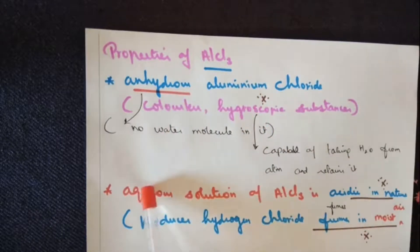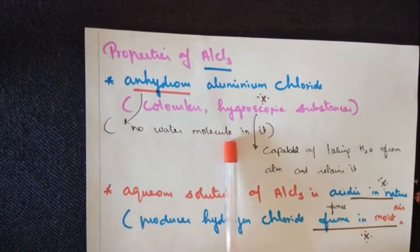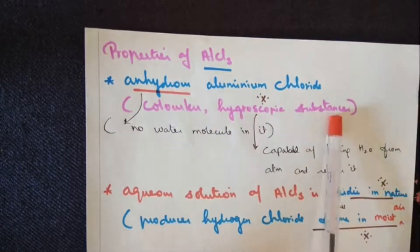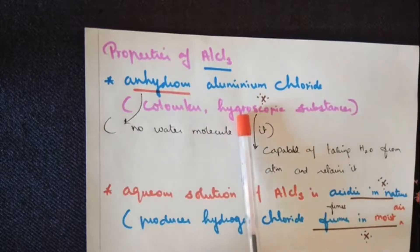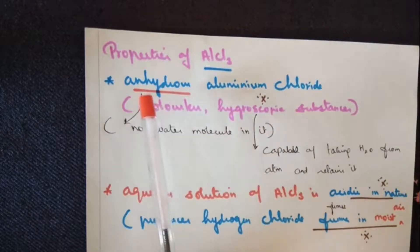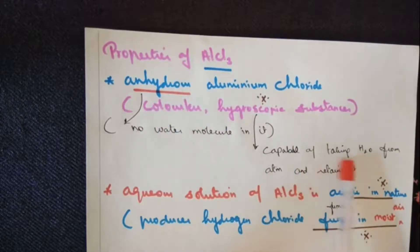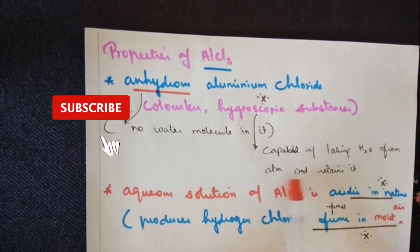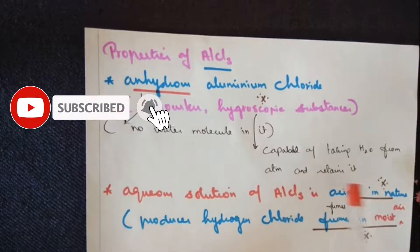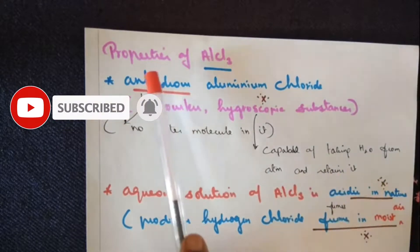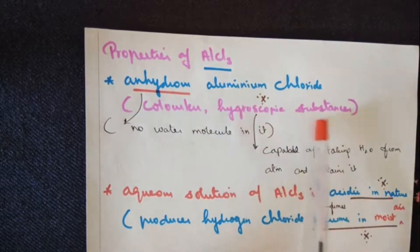What's the meaning of anhydrous? The chemical compound does not have water molecules in it. It's anhydrous but hygroscopic substance. Though it does not have water molecules on its own, it has the ability or is capable of taking water molecules from the atmosphere and retaining them. So anhydrous aluminium chloride is hygroscopic substance.